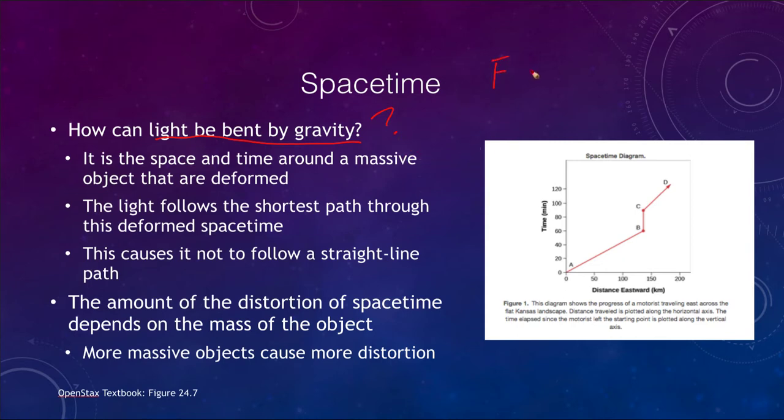If you recall, Newton gave us the force is equal to the gravitational constant times the product of the masses divided by the distance between them squared. If one of these masses was light and it had zero value, then of course the force is going to be zero. But what happens according to Einstein is that the space and time around a massive object are deformed, not nice and straight and flat. And the light will follow the shortest path available through that deformed spacetime. Because of this, light does not travel a straight line path as it otherwise would.